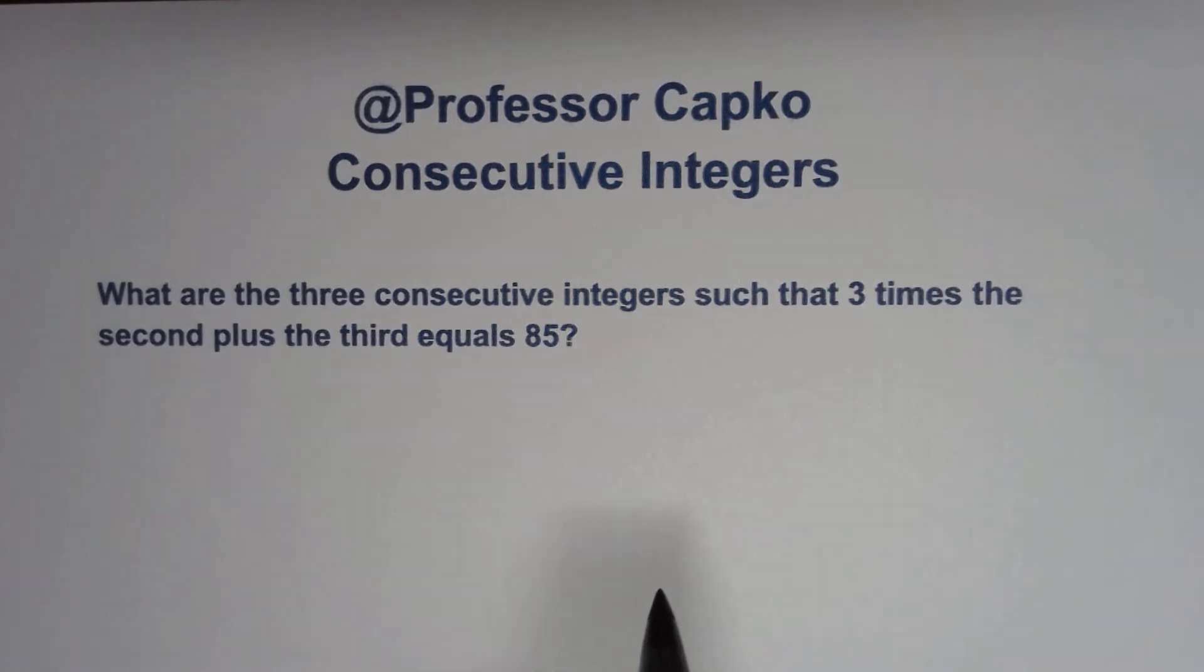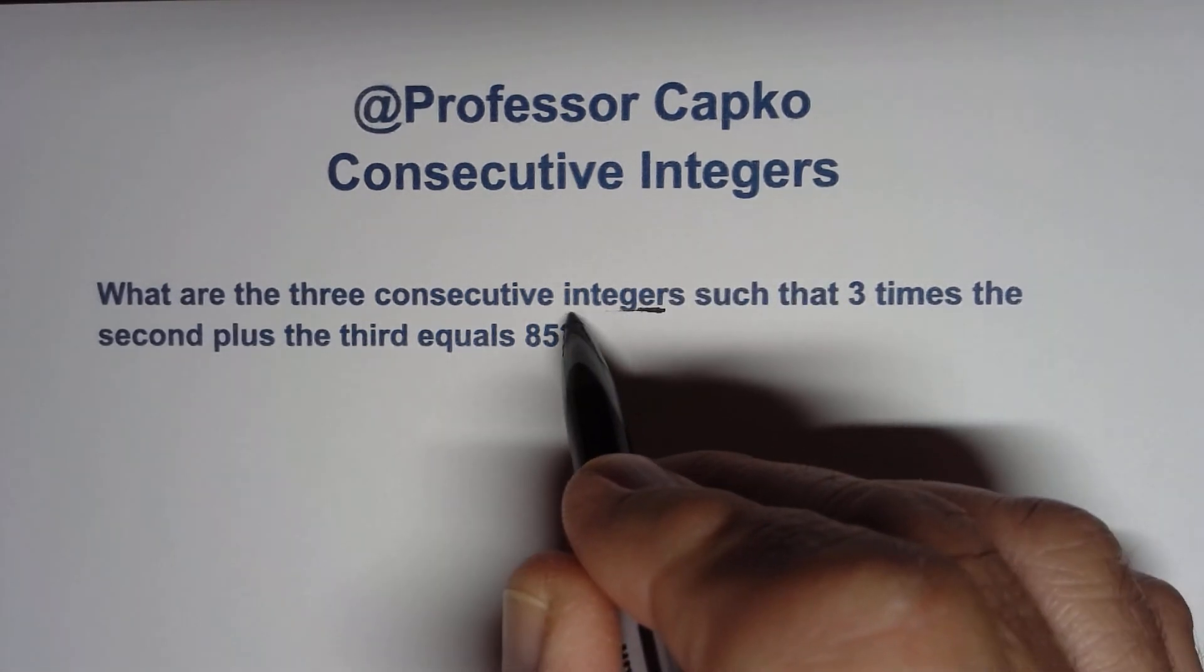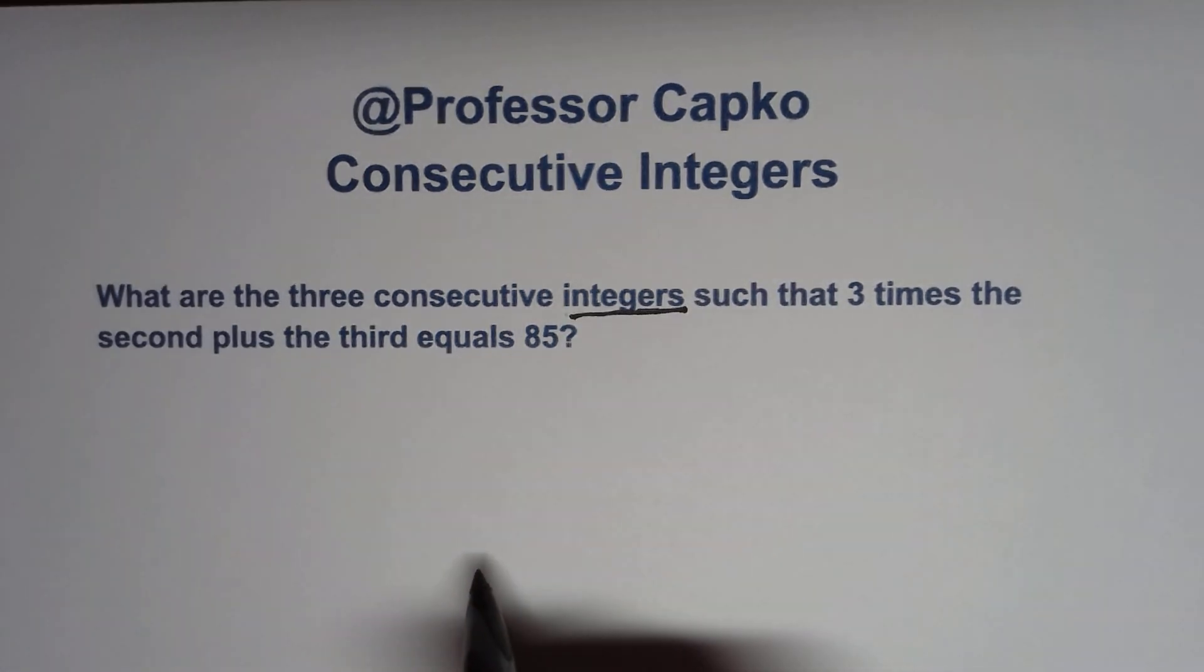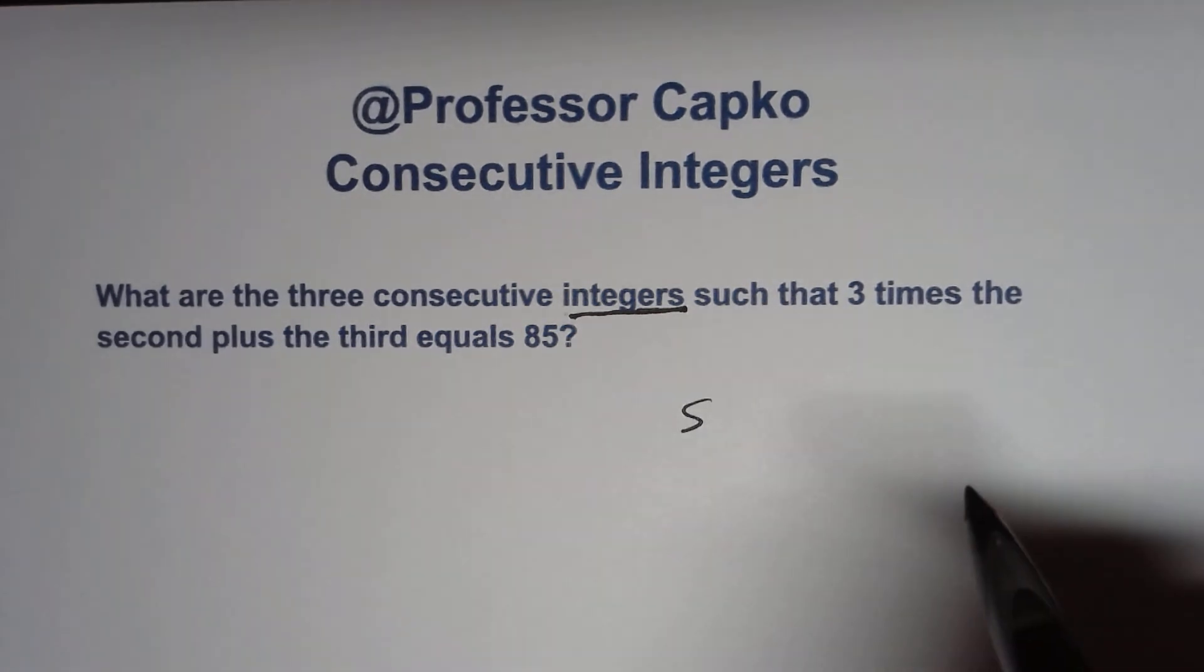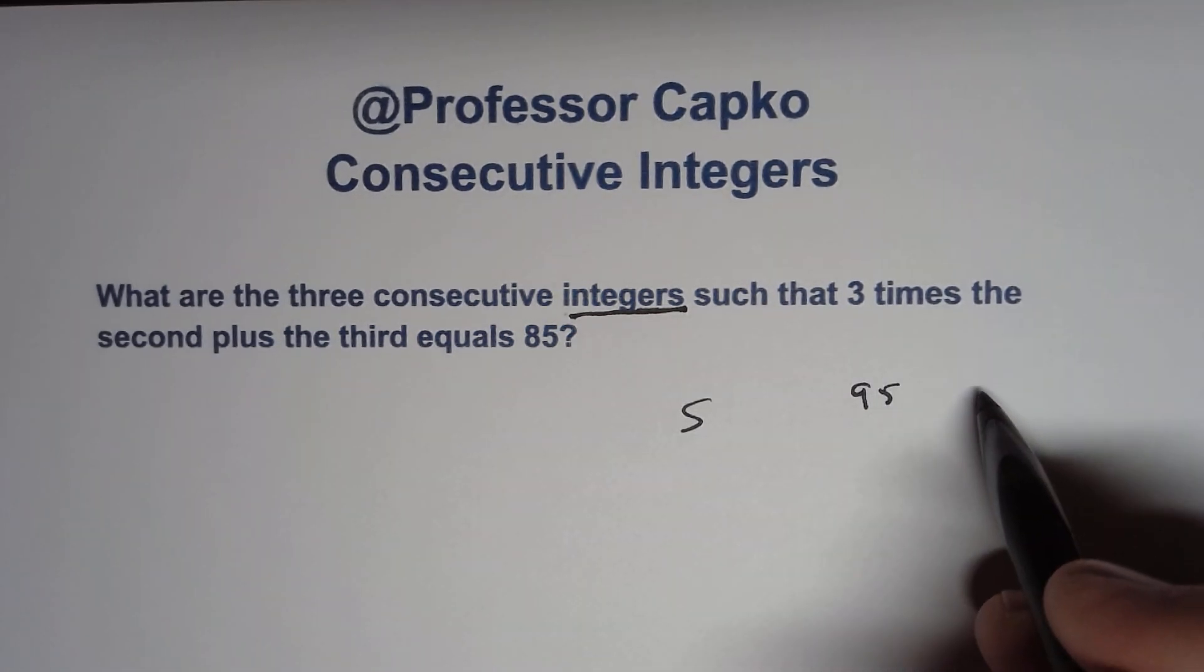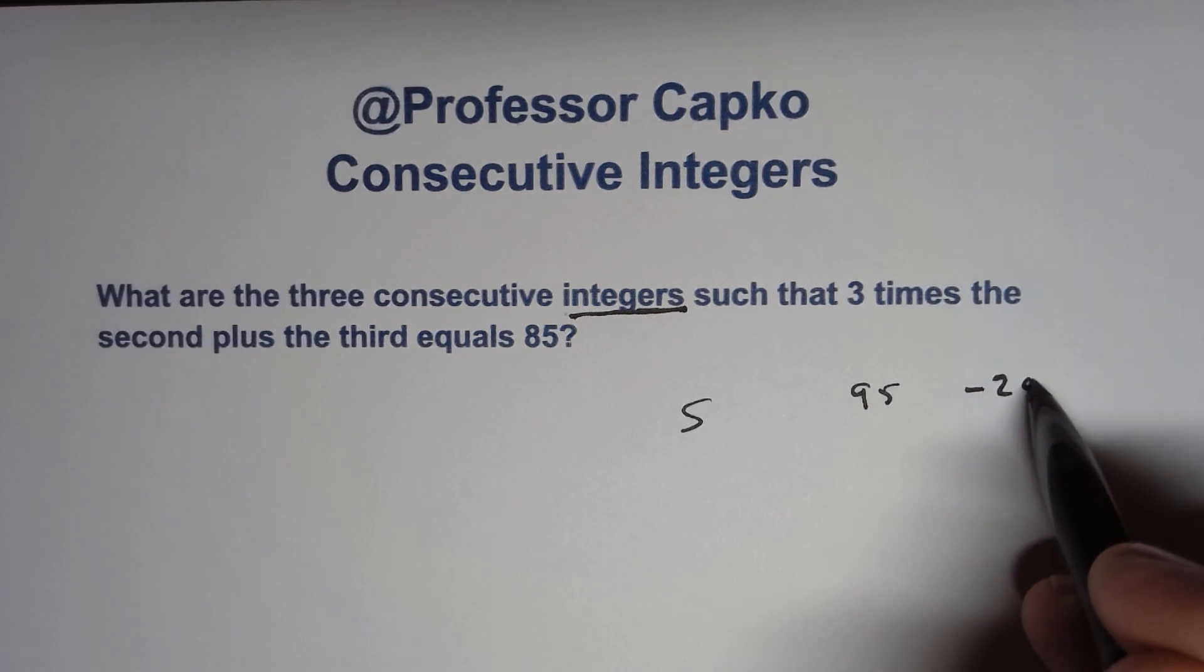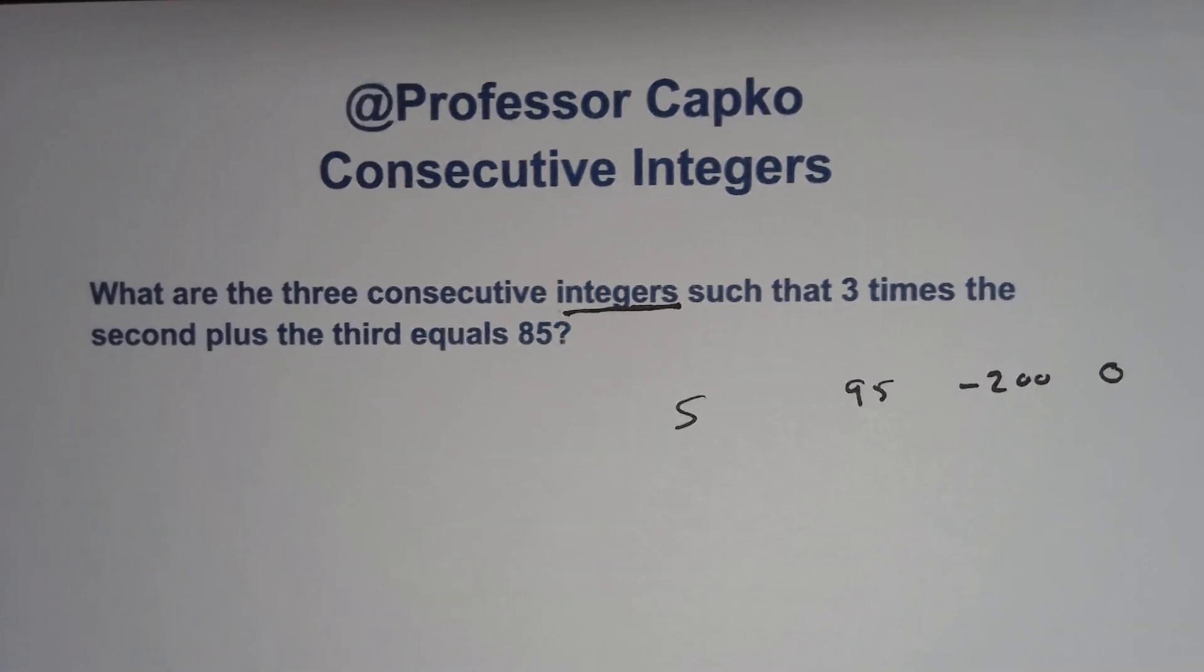Well, first let's get some definitions down. What is an integer? An integer is a number that is not a fraction, so there's no fractions, there's no decimals. Examples would be 5 and 95 and negative 200 and 0. Those are all integers.